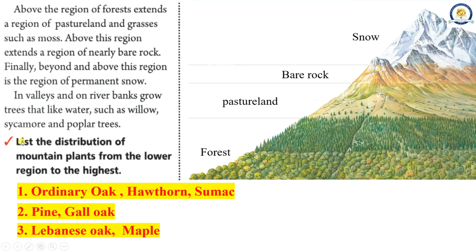List the distribution of mountain plants from the lower region to the highest. 1. Ordinary oak, hawthorn, sumac. 2. Pine, gall oak. 3. Lebanese oak, maple.